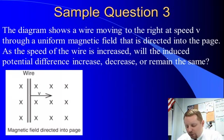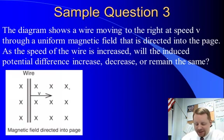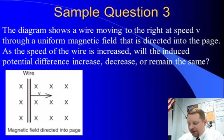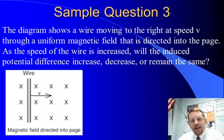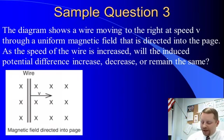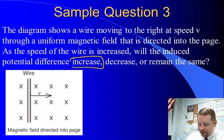Here we have a diagram showing a wire moving to the right at some speed v, through a uniform magnetic field directed into the page — hence the X's, showing the back of the arrow as the field points into the screen. As the speed of the wire is increased, will the induced potential difference increase, decrease, or remain the same? The faster it moves, the greater the induced potential difference, and the greater the magnetic field, the greater the induced potential difference. So since it's going faster, the potential difference must increase.